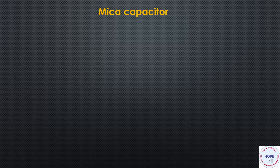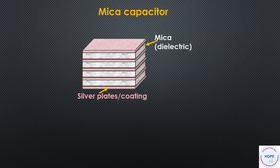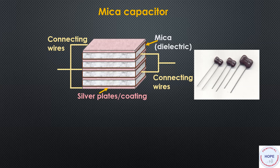The next type is the mica capacitor. It comprises different sheets of mica which act as the dielectric, with silver plates in between them. We can have alternate plates of mica and silver, or mica sheets coated with a silver coating. Silver coating is always preferred over silver plates. These are the external connections.